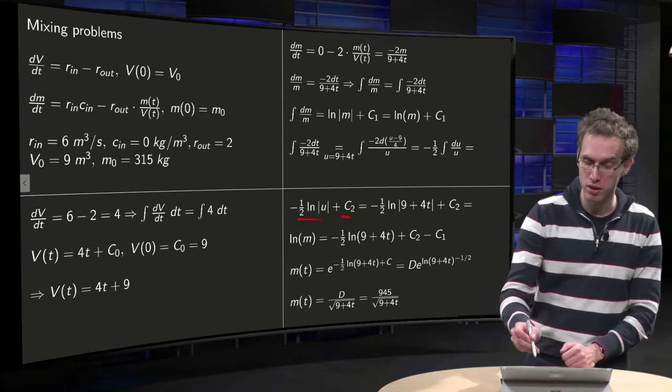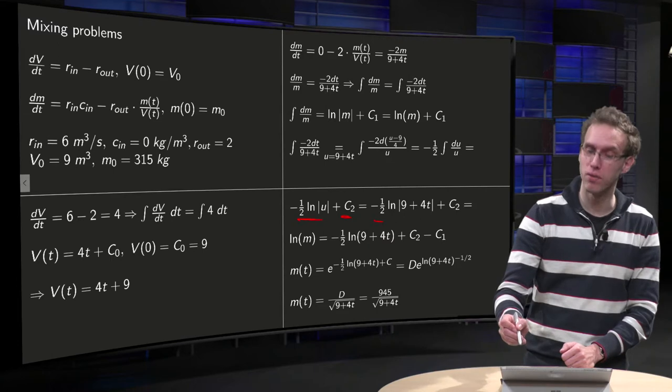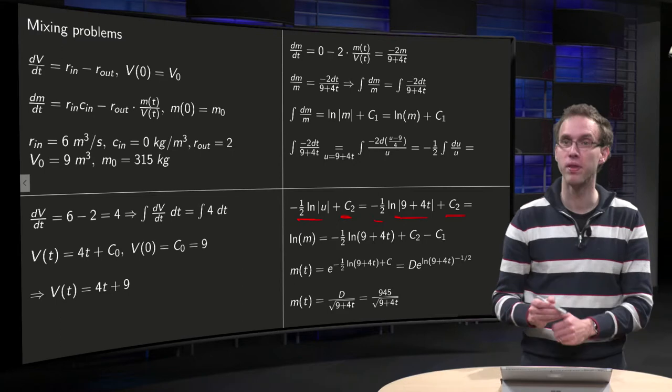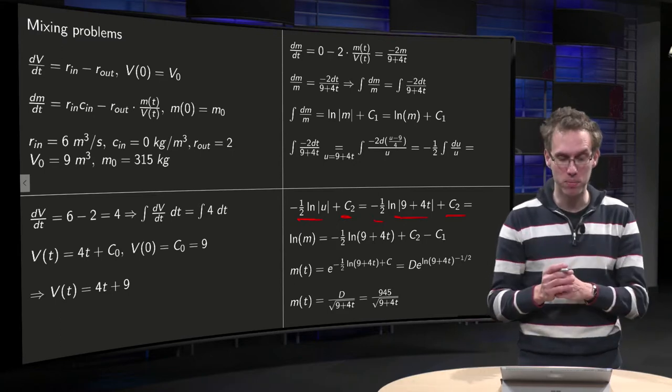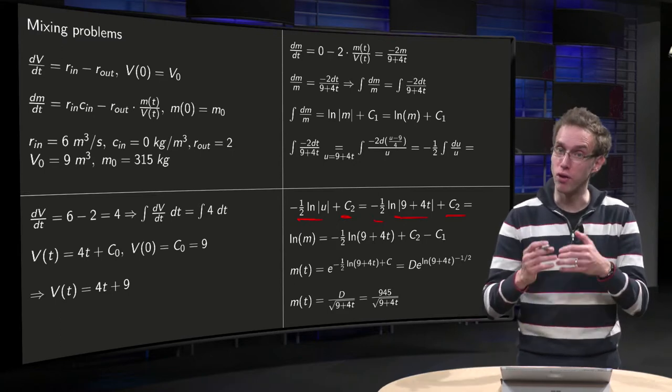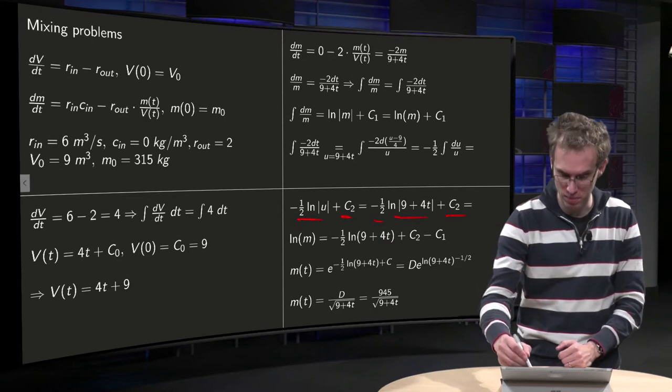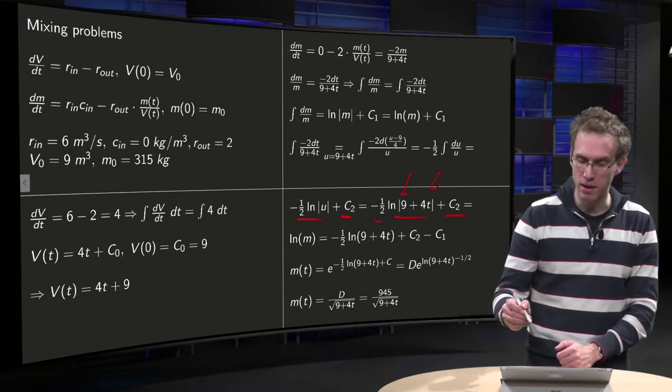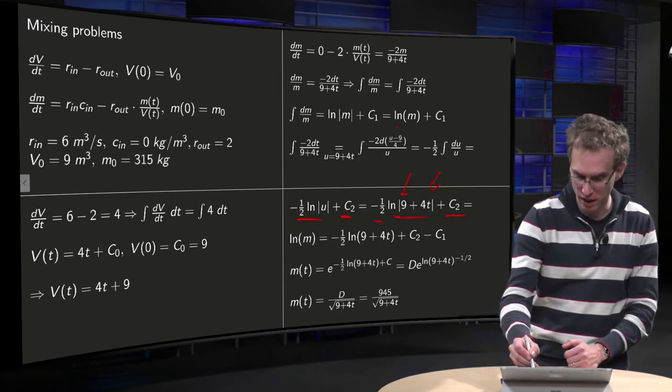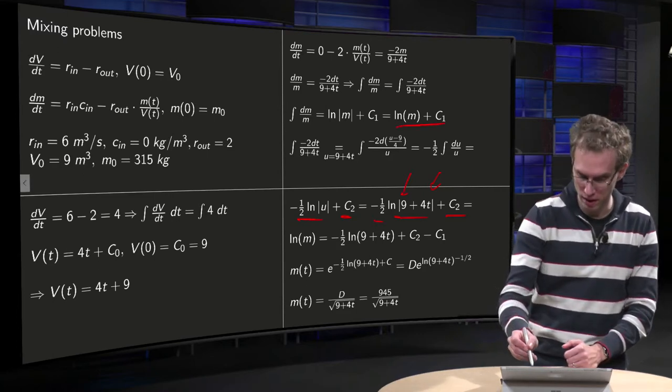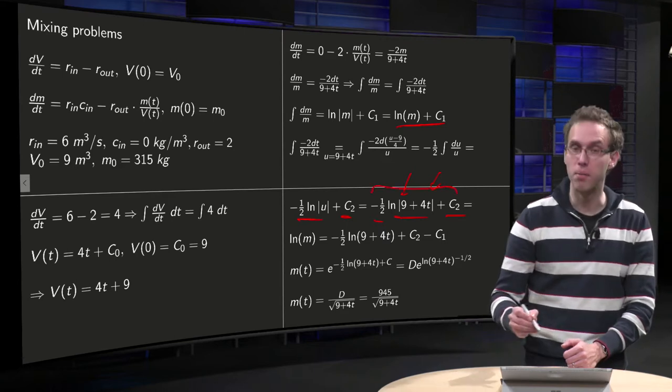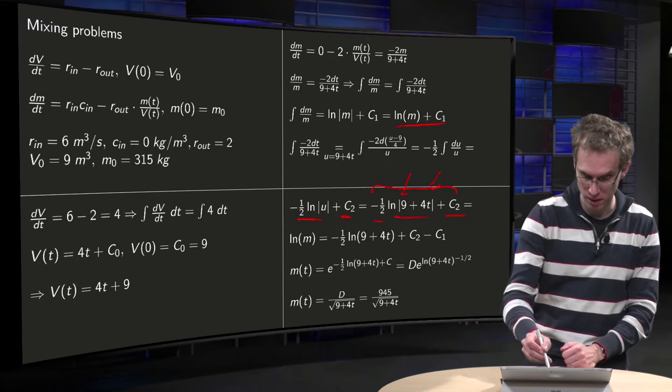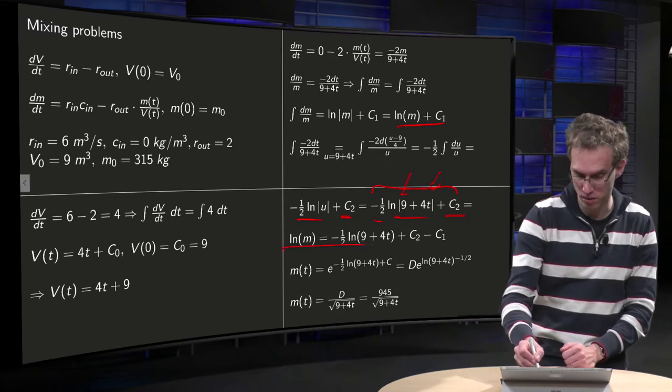So we get minus 1 half, and u was 9 plus 4t, ln 9 plus 4t absolute value plus c₂. But this 9 plus 4t is also the volume, so it should be positive, so that means that you can get rid of the absolute value signs. Then you equate it to what we had here. The ln of m plus c₁ equals over here minus 1 half ln of 9 plus 4t plus c₂. Put this c₁ to the other side, so we are over there.